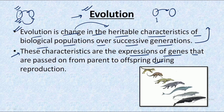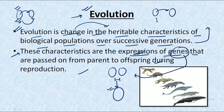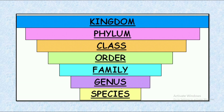These characteristics are the expression of genes that are passed on from parents to offspring during reproduction. These changes are a result of the expression of genes, and these genes are the genetic material transported from parents to offspring.